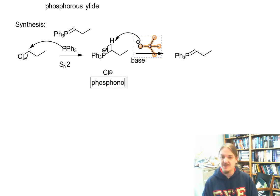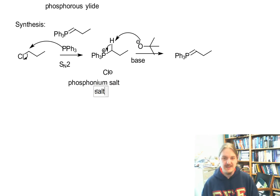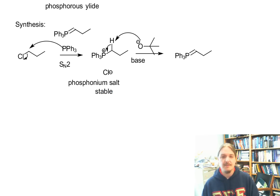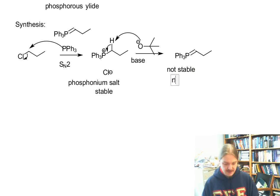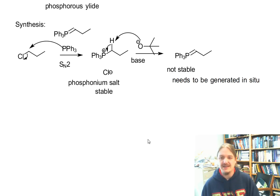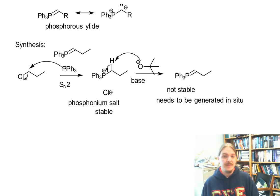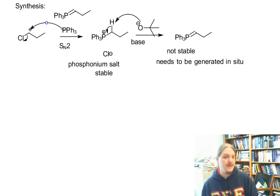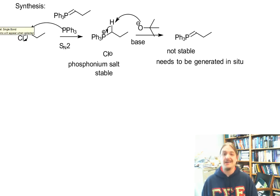This intermediate compound is called a phosphonium salt. These are often stable, and so they can be stored or even sometimes purchased. The ylid is often not stable and so needs to be generated in situ — meaning in the site of the reaction, right where we need it. Because it starts off with an SN2 reaction, generally primary halides are going to be your best bet here. Secondary could be made to work; tertiary is a non-starter.